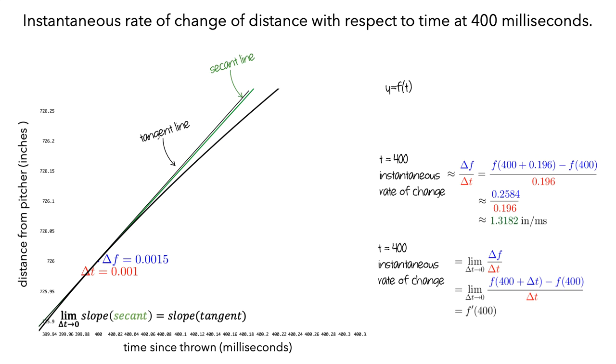So, the instantaneous rate of change of distance with respect to time at 400 milliseconds can be represented graphically as the slope of the tangent line at 400 milliseconds.